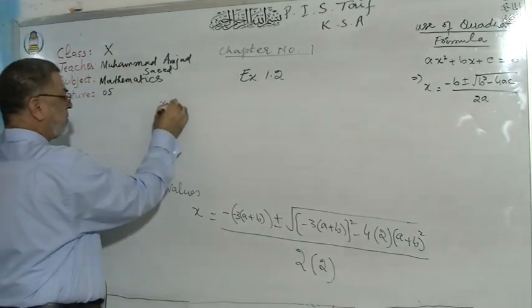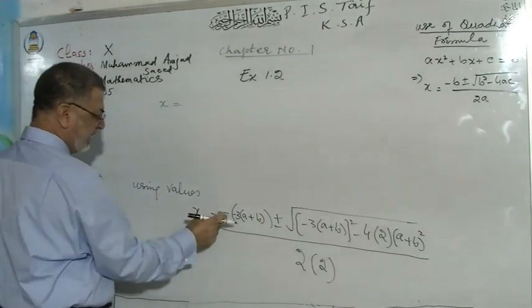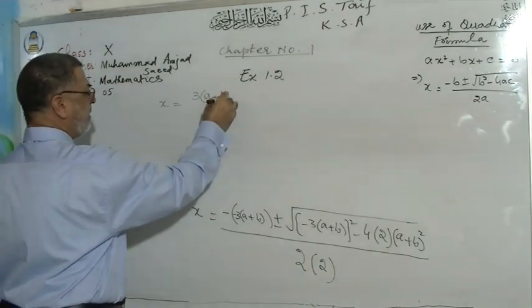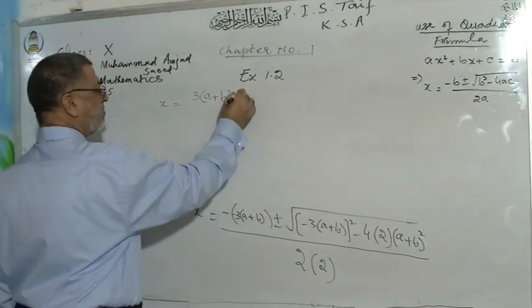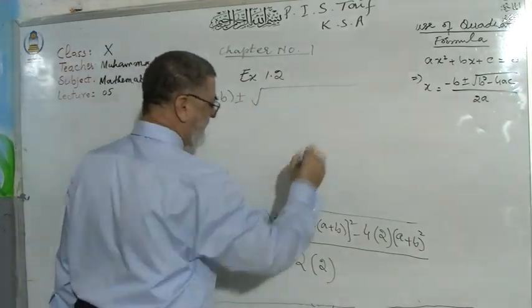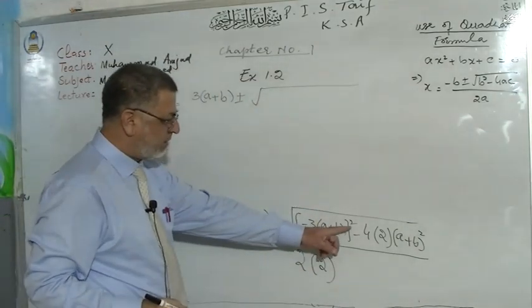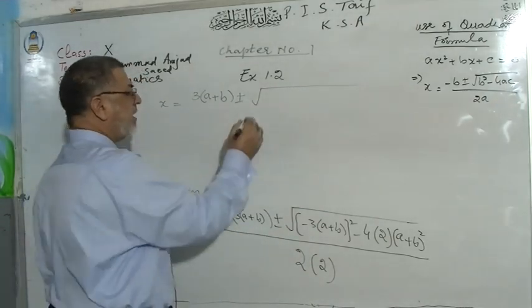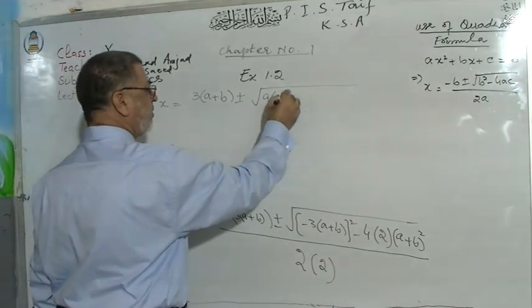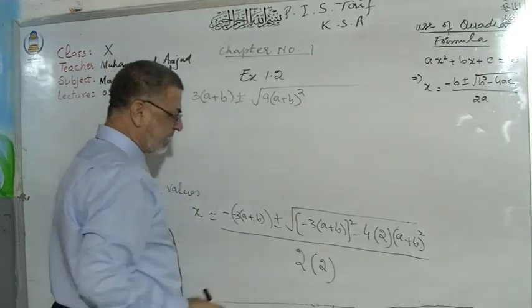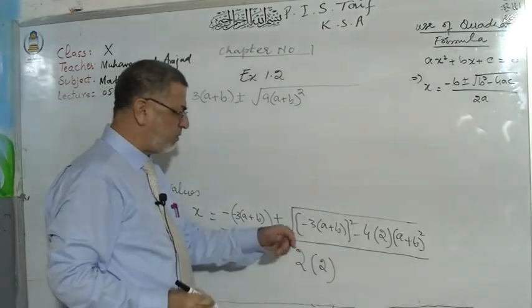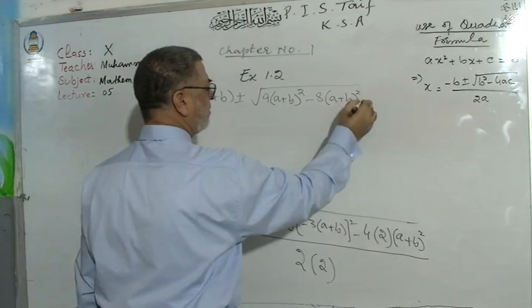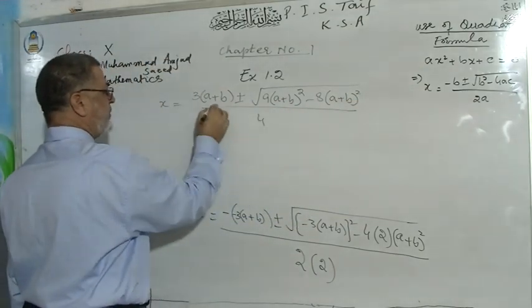So x = (3(a+b) ± √(a+b)²) / 4. The square root and the square cancel out, and we are left with x = (3(a+b) ± (a+b)) / 4.